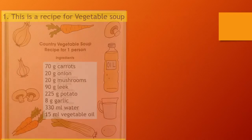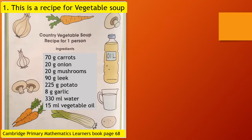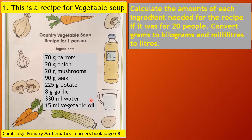First problem. This is a recipe for vegetable soup. This recipe is good for one person. The ingredients are: 70 grams of carrots, 20 grams of onion, 20 grams of mushrooms, 90 grams of leek, 225 grams of potato, 8 grams of garlic, 330 ml of water, and 15 ml of vegetable oil. Calculate the amounts of ingredients needed for the recipe if it was for 20 people, and then convert the grams to kilograms and milliliters to liters.